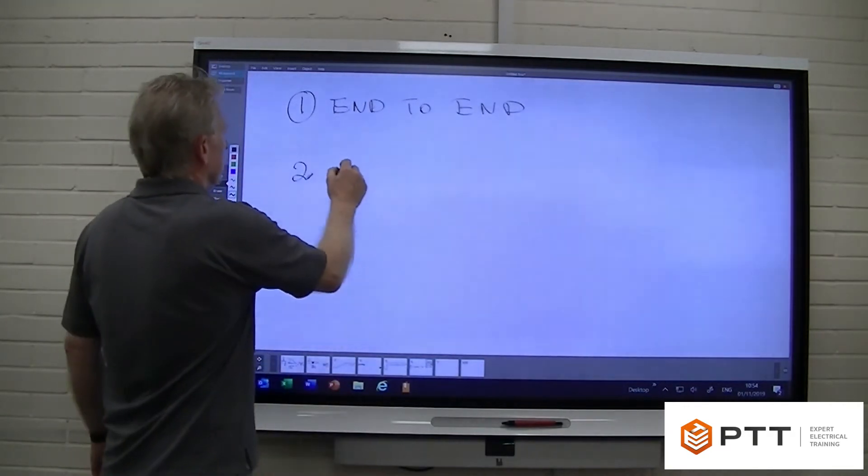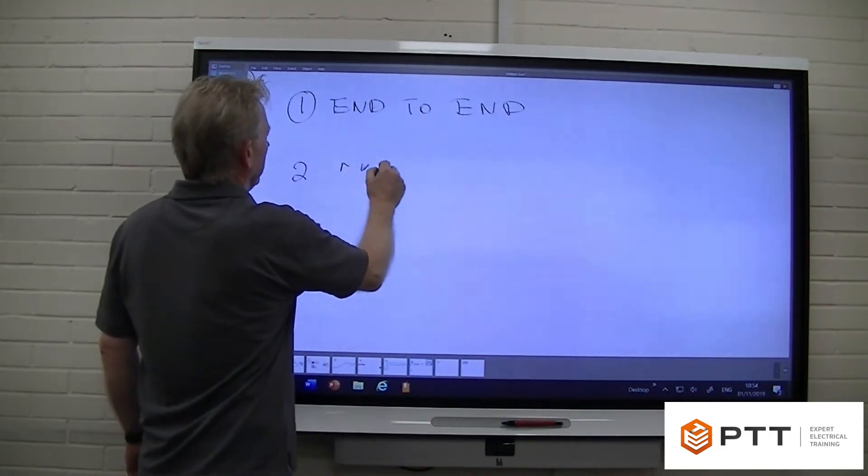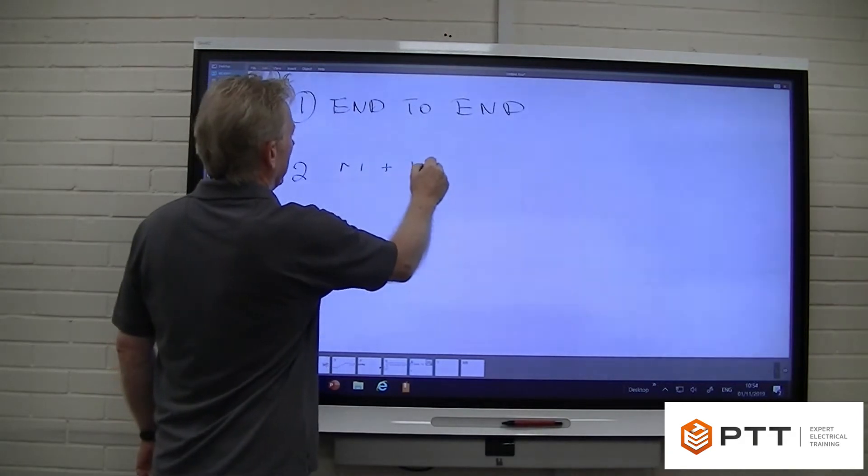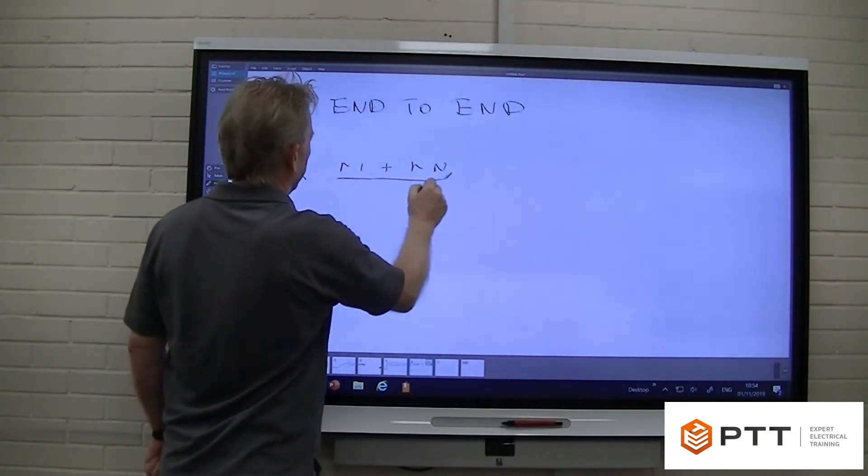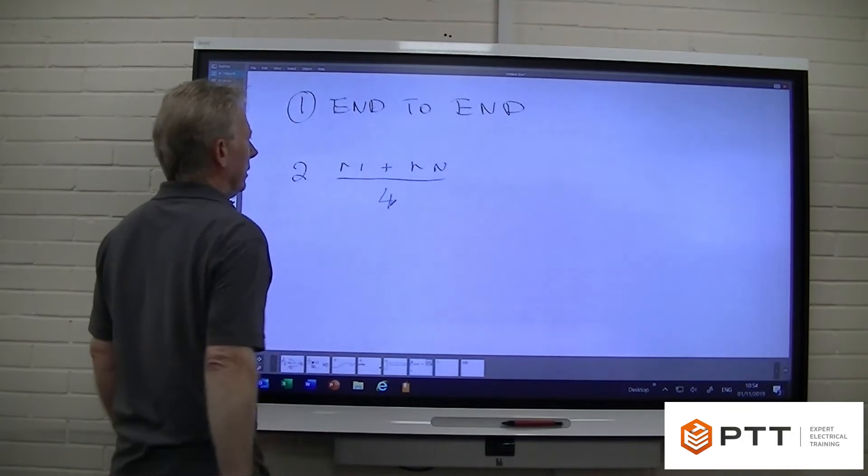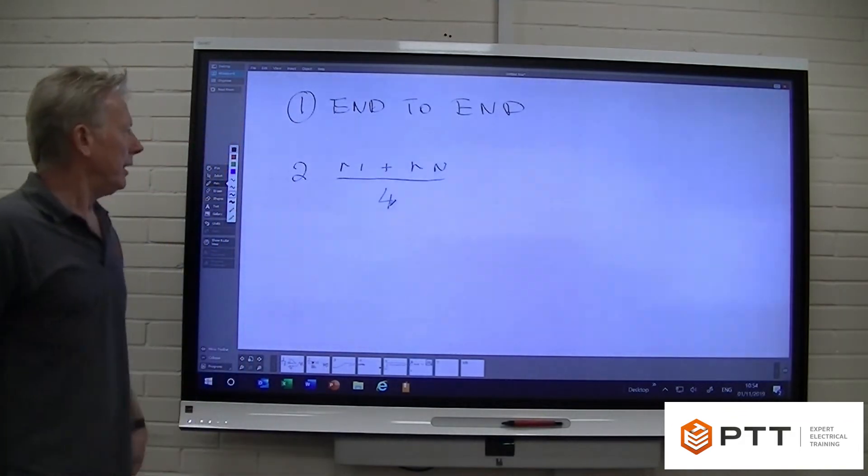The second test we're going to do is what we call little r1 plus little rn, and we're going to divide that by four, and we're going to make a cross connection and test it.